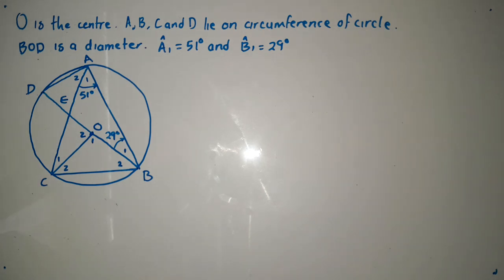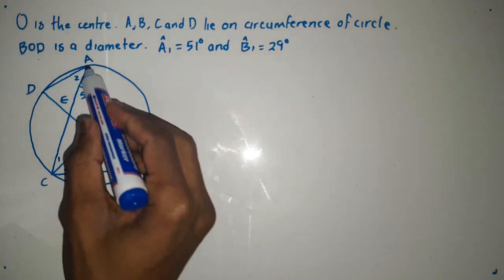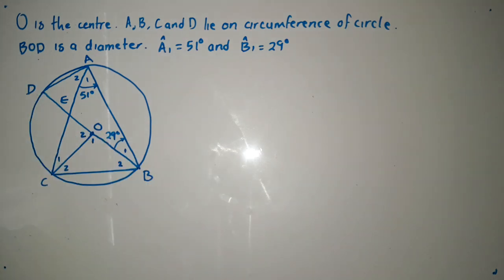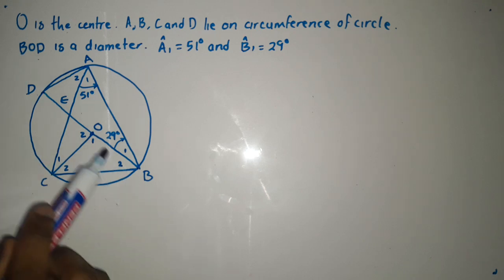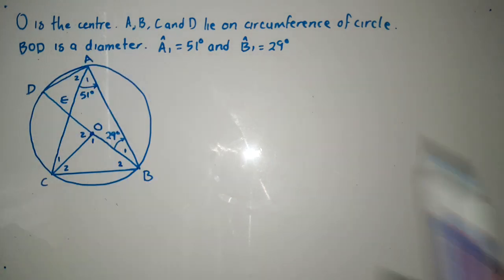Let me read the statement. O is the center. A, B, C, D lie on a circumference of a circle. Then B, O, D is a diameter.